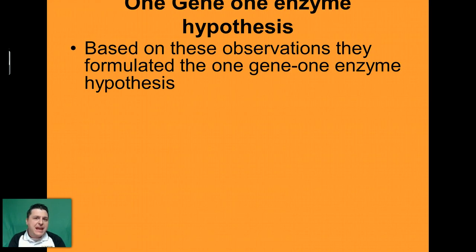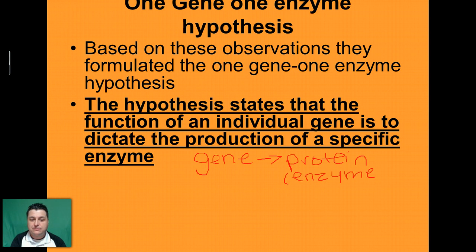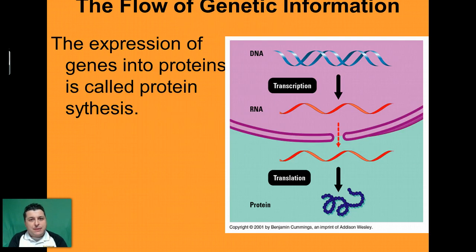So Beadle and Tatum formulated what we call the one gene, one enzyme hypothesis, which states that each individual gene's purpose — its function — is to dictate the production of a specific enzyme. In other words, a gene is responsible for the production of a particular protein, or in this case, a particular enzyme. We've since confirmed this and extended it to include all types of proteins. So genes code for proteins, and our genotype is going to code for our phenotype. The process of going from DNA to protein — from DNA to our physical trait — is called protein synthesis.